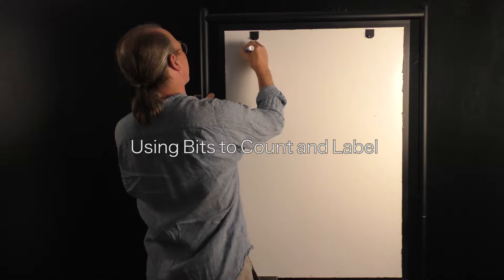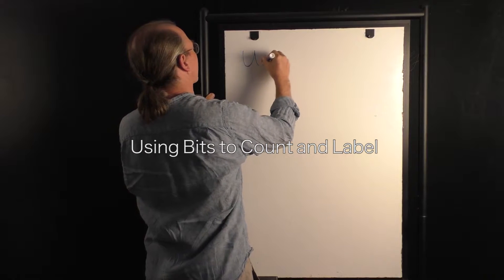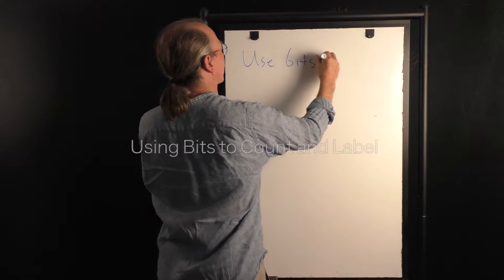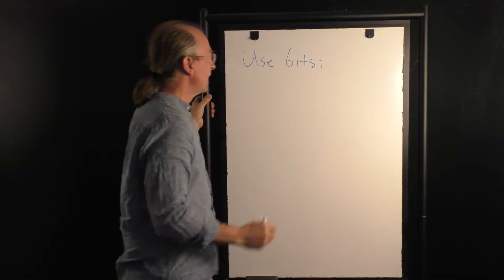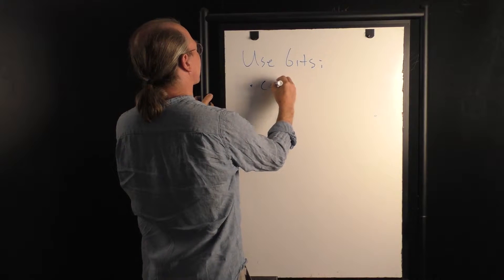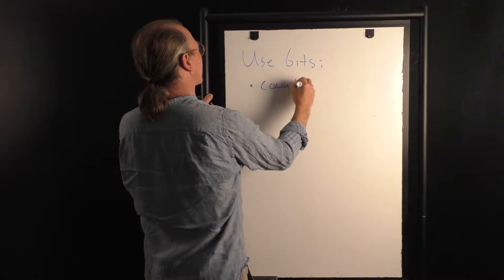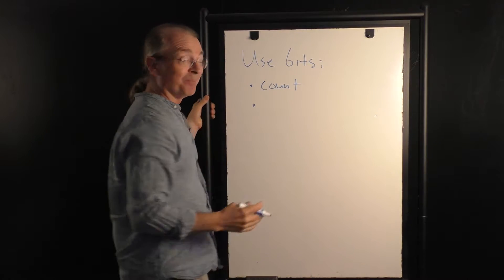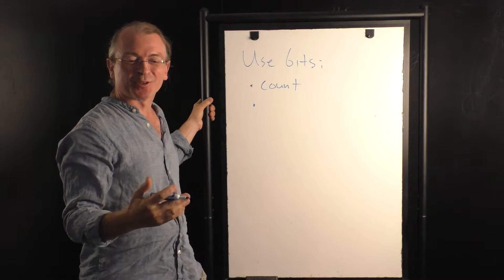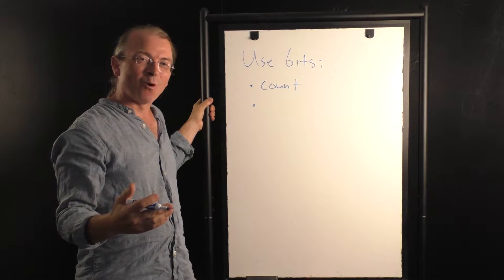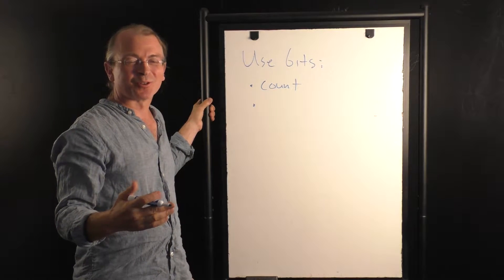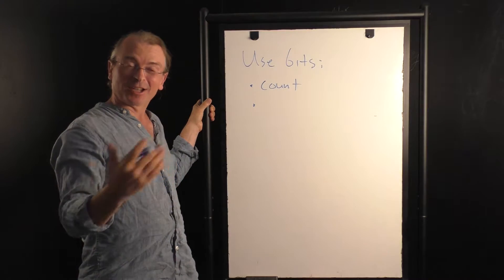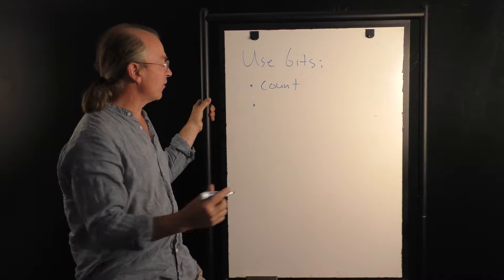How do we use bits? We can count. For example, in binary: 0, 0, 0, 0, 0, 0, 0, 0, 0, 0, 1, 0, 0, 0, 1, 0, 0, 0, 1, 1 — and so on. So we can count.